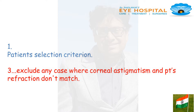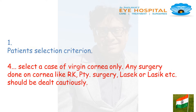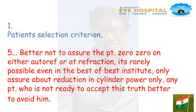Criteria 3: Exclude any case where corneal astigmatism and patient refraction do not match. Criteria 4: Select a case of virgin cornea only. Any surgery done on the cornea, like RK, pterygium surgery, LASIK, etc., should be dealt with cautiously or better avoided. Criteria 5: Better not to assure the patient zero cylinder on either autorefractometer or at refraction — it is rarely possible even in the best institutes. Only assure about reduction in cylindrical power. Any patient who is not ready to accept this truth, better to avoid.